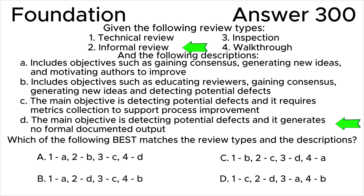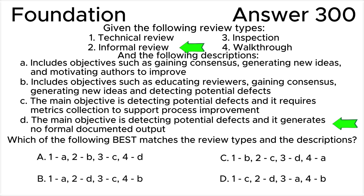Review type two — Informal Review. The main objective is to detect anomalies. The process is not defined and does not require formal documented output. This matches description D: the main objective is detecting potential defects and it generates no formal documented output.